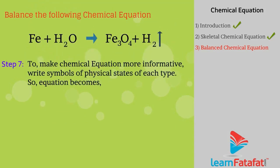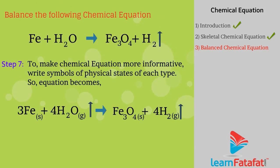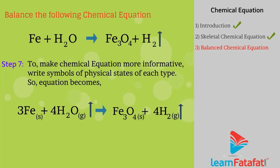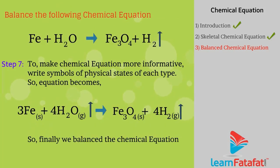This method of balancing a chemical equation is called the hit and trial method. Finally, to make the chemical equation more informative, write the symbols of the physical states of each substance. So the chemical equation is now fully balanced.